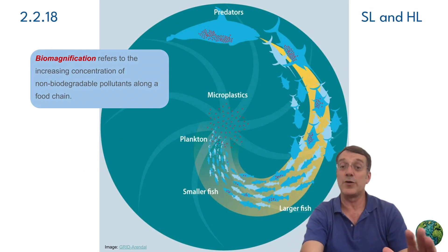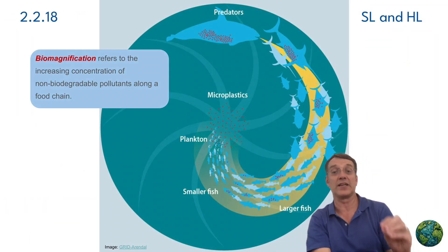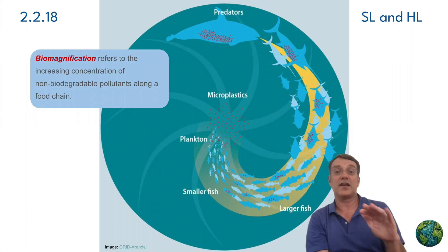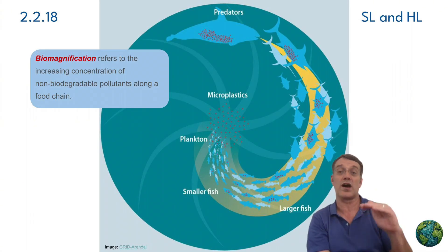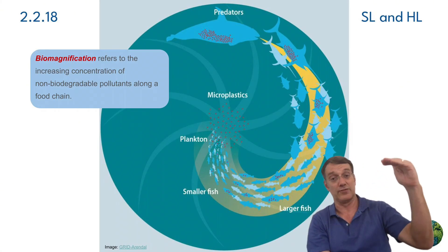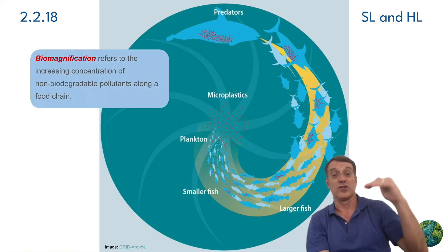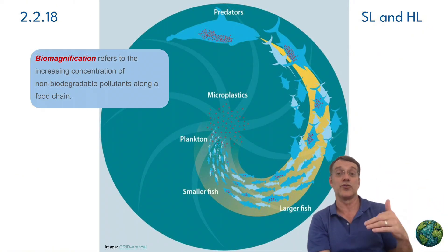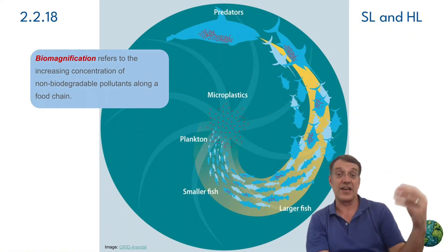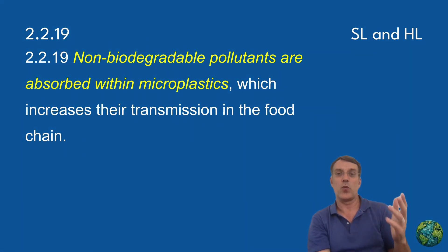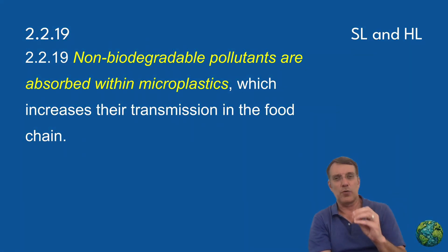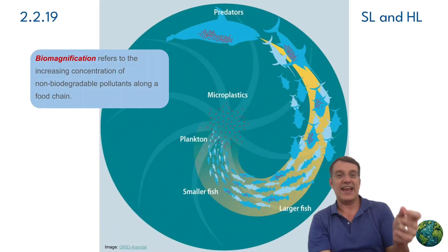Similar to bioaccumulation is something called biomagnification. Biomagnification means that toxins become more concentrated at higher trophic levels as larger and larger predators consume many contaminated prey. This problem is made worse by microplastics, because microplastics can absorb these pollutants and that helps increase their transmission through food chains.